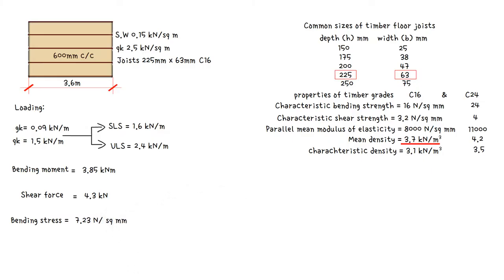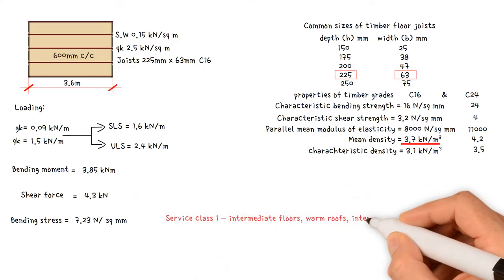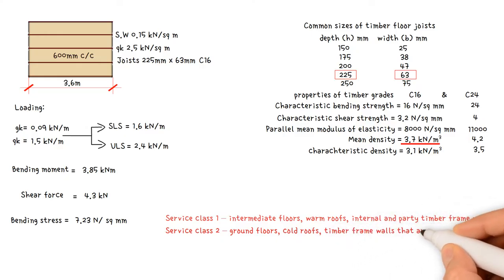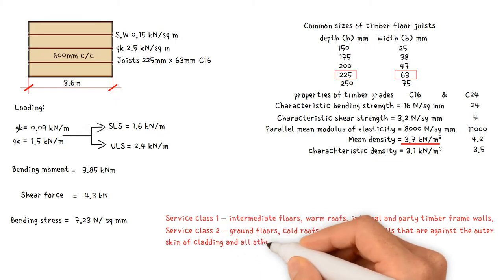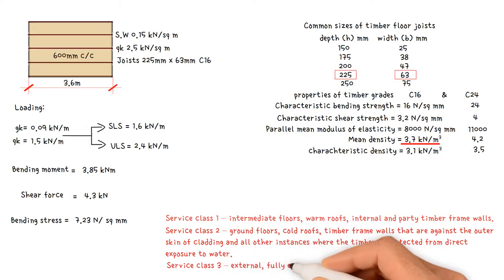This value must be compared to joist strength. Timber is a hygroscopic material that absorbs and releases moisture depending on the amount of moisture in its surrounding environment. Because the strength and stiffness properties of timber are affected by moisture content, the environment around the timber must be considered. There are three service classes. Service class 1: intermediate floors, warm roofs, internal and party timber frame walls. Service class 2: ground floors, cold roofs, timber frame walls against outer cladding skin, and all instances where timber is protected from direct water exposure. Service class 3: external, fully exposed.